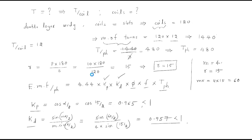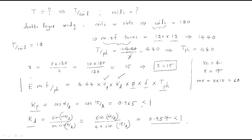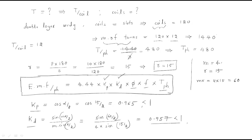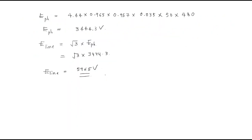This is the complete procedure to find the EMF induced by an alternator. Keep in mind the EMF equation: unlike a transformer where E = 4.44 × φ × f × N, for an alternator the winding is short pitched and distributed, so two factors Kp and Kd are included. First find Kp, then Kd, then apply the calculation. I hope all of you understand the session. Thank you.